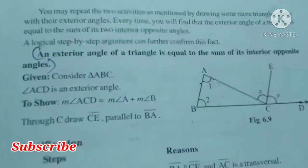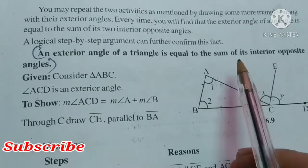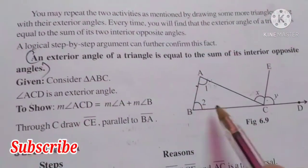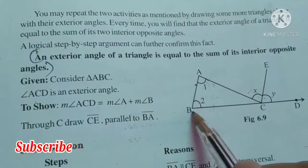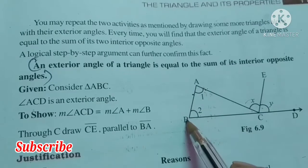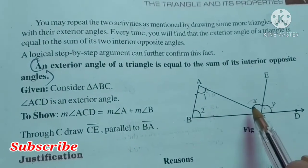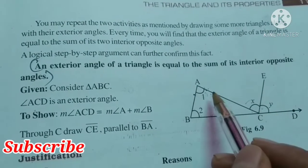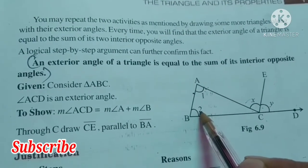An exterior angle of a triangle is equal to the sum of its interior opposite angles. Here you can see triangle ABC is given, where EC is parallel to AB. X and Y are exterior angles, and 1 and 2 are interior angles.